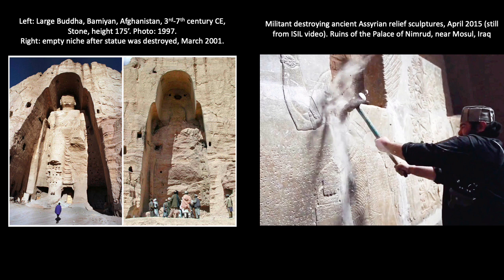In 2001, fundamentalist rulers known as the Taliban declared that all statues in the country of Afghanistan were to be destroyed because they were being worshipped and venerated by unbelievers. The order targeted statues large and small in both museums and private spaces. The statues that caught the public's attention most were a pair of monumental Buddhas in Bamiyan. Carved directly into the living rock of a cliff face sometime between the 3rd and 7th centuries, despite international diplomatic efforts, the sculptures were destroyed by the Taliban using explosives in early March 2001.